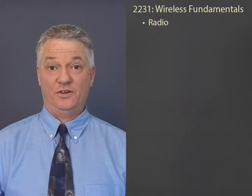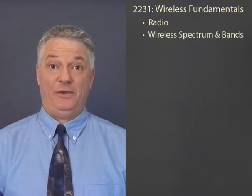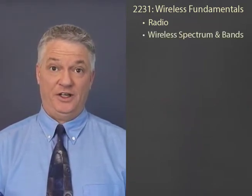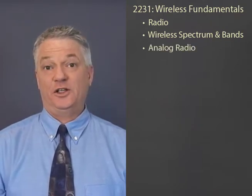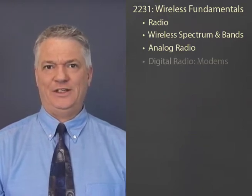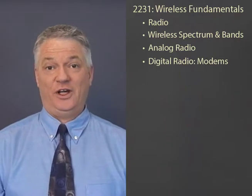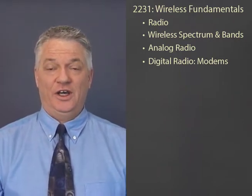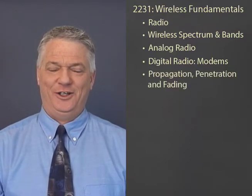We'll start off with some general principles — why we use radio instead of light for wireless communications, for example — and then look at the wireless spectrum, the different radio bands that have been allocated for different services. Then we'll talk about analog radio and spend a fair amount of time on digital radio, which is actually using modems over radio and how modems work, and then finish off with propagation, penetration, and fading.